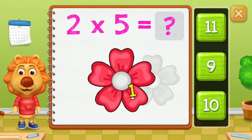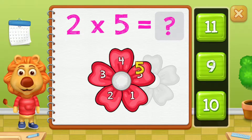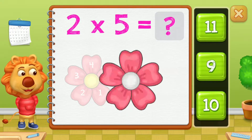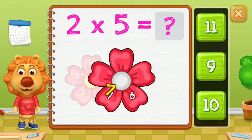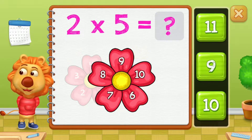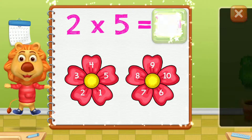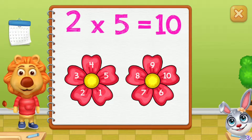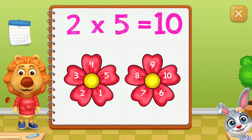One, two, three, four, five, six, seven, eight, nine, ten! Two groups of five equals ten!